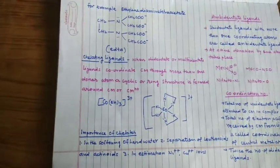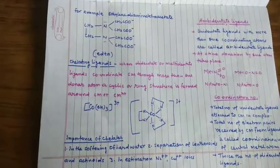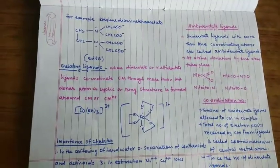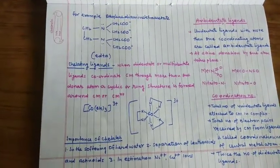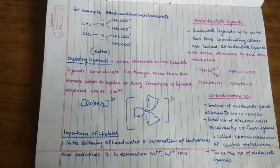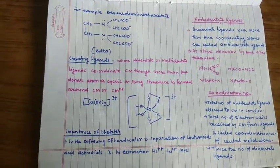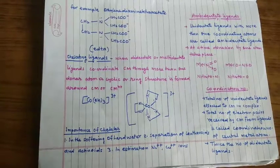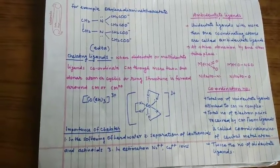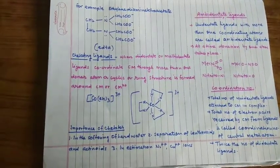Chelate term आता है कई बार। Chelate ligands क्या होते हैं? Actually होता ये है बच्चों कि when multidentate ligand or polydentate ligand, multi or poly dentate का मतलब if the ligand is having more than one donor atom और दोनों से एक साथ वो coordinate करे।